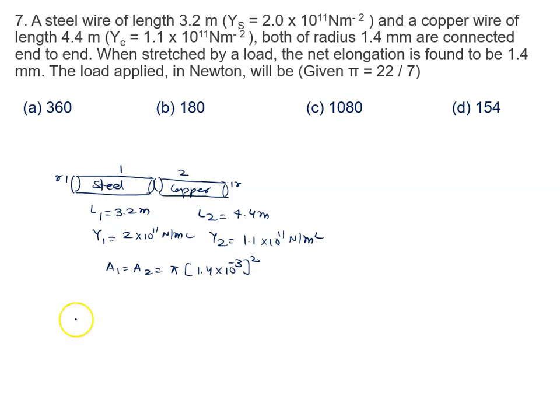They are connected end to end. When stretched by a load, net elongation is found to be 1.4. We stretch it by the load. I apply the force F. And total elongation means elongation in one is x1 and another is x2. So I can say x1 plus x2 is given by 1.4 millimeter.